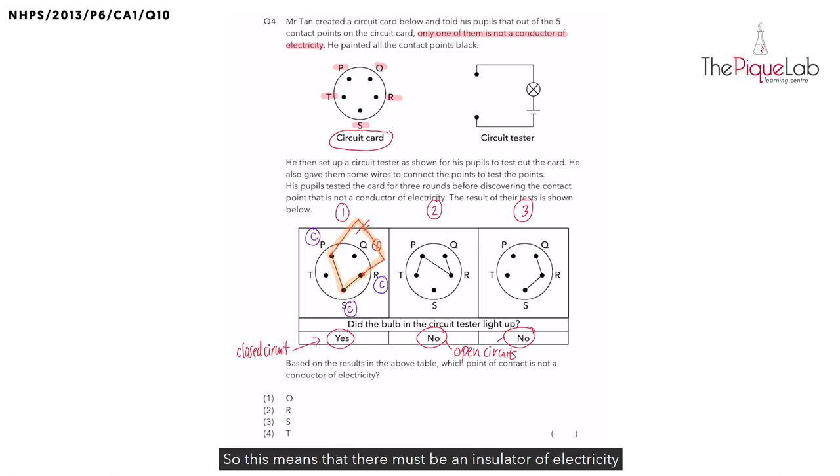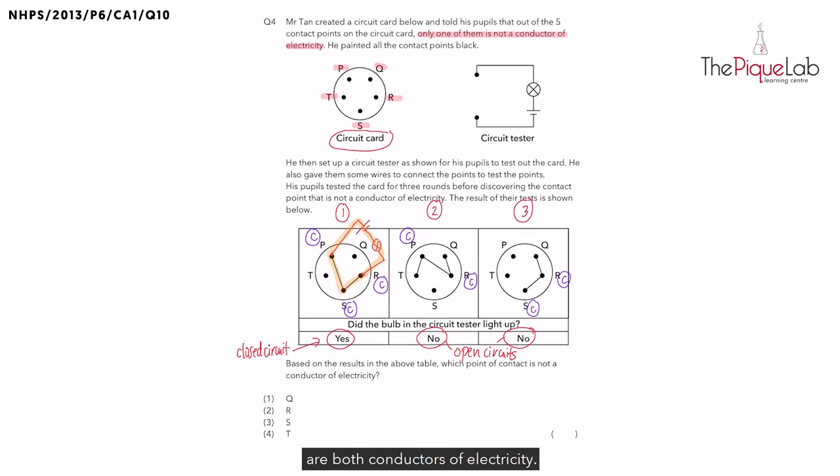So this means that there must be an insulator of electricity that is connected in setups 2 and 3. Now from setup 1, we know that contact points P, S and R are conductors of electricity. So I'm going to label those points in setups 2 and 3. Remember, P and R are both conductors of electricity. And in setup 3, R and S are both conductors of electricity.